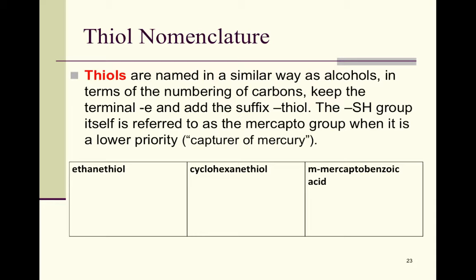Thiols are named similarly to alcohols in terms of carbon numbering. Keep the terminal 'e' and add the suffix '-thiol' — as seen with the garlic/onion examples. When the –SH group does not have naming priority, it is called 'mercapto' — from the Latin for 'capturer of mercury,' since sulfur can bind mercury. For practice: ethane thiol has two carbons with –SH; cyclohexane thiol has –SH on a cyclohexane ring (no number needed); and meta-mercaptobenzoic acid has –SH meta to the carboxylic acid group on benzene.